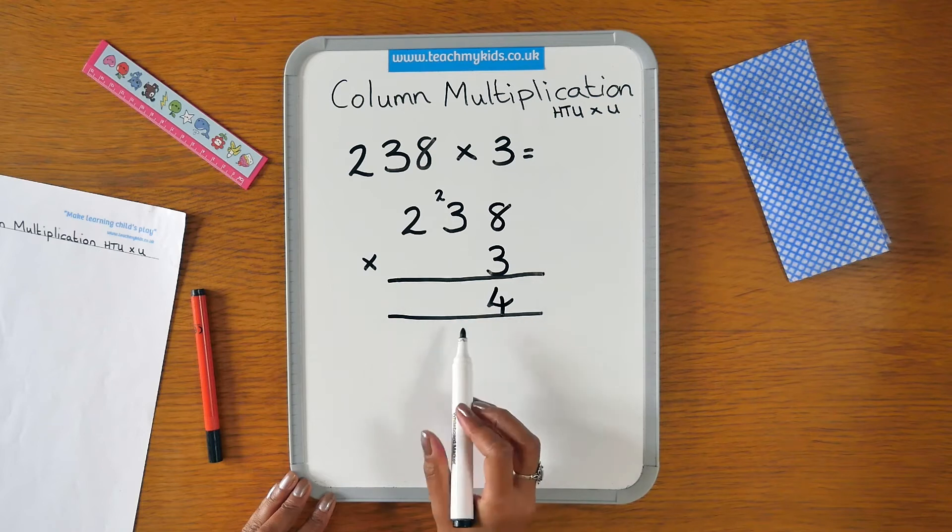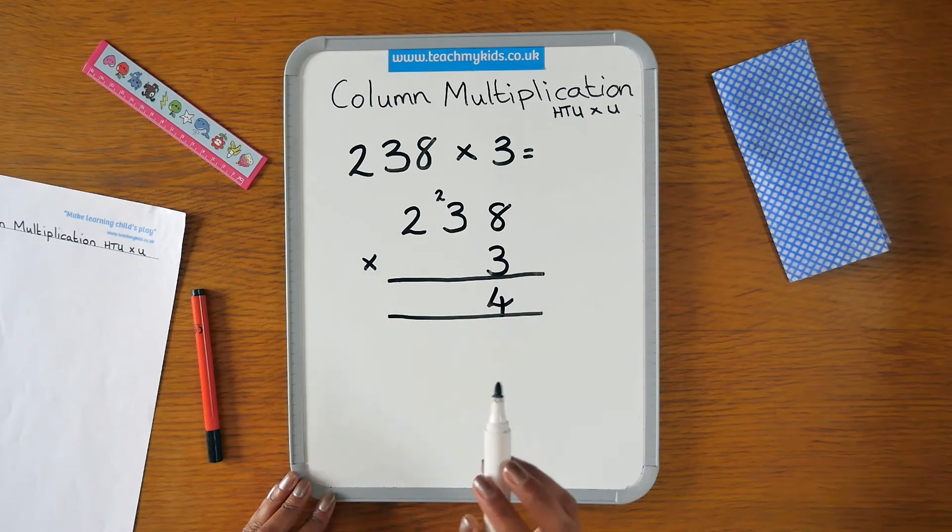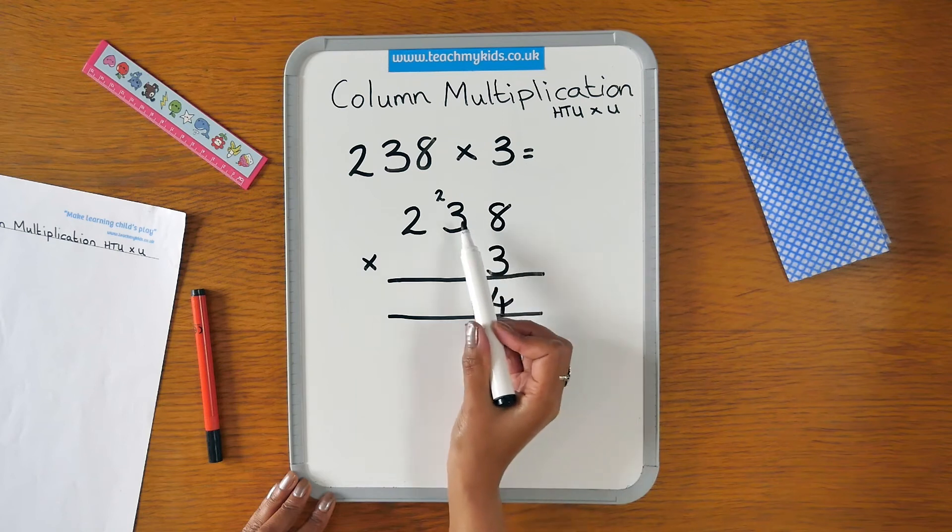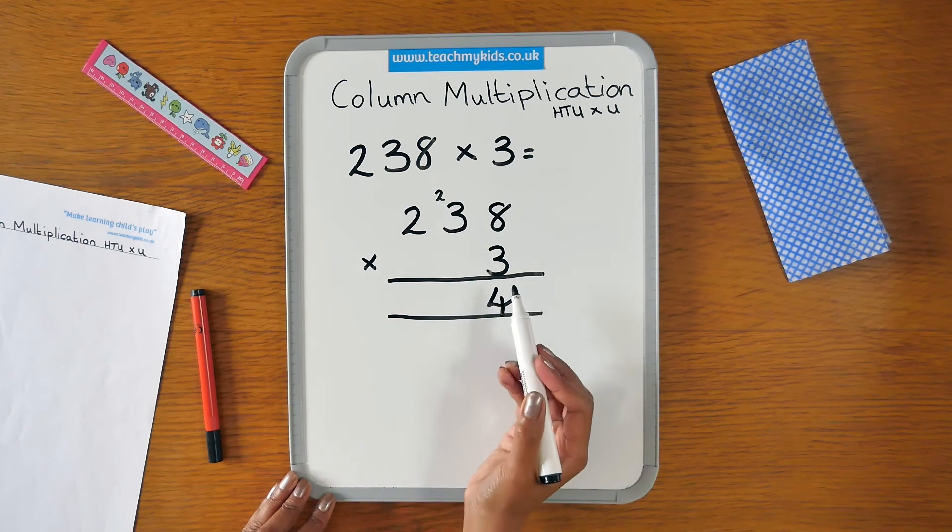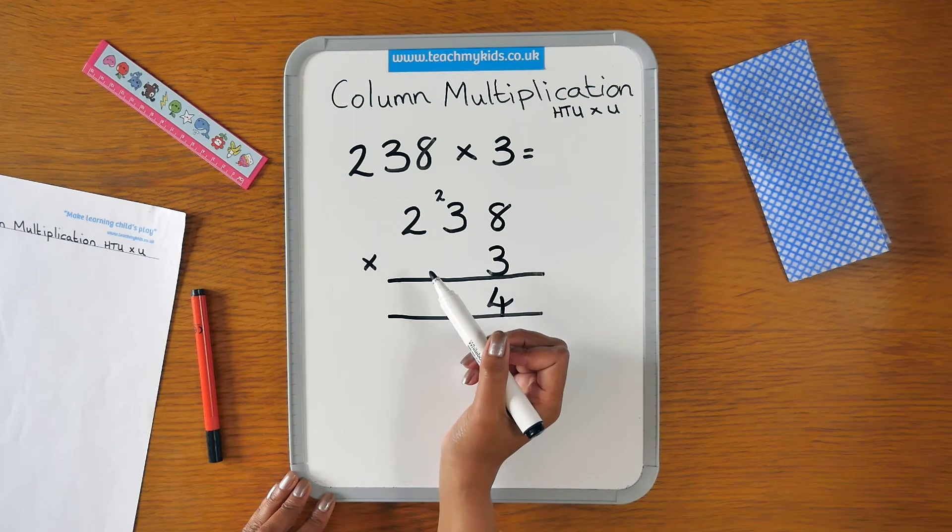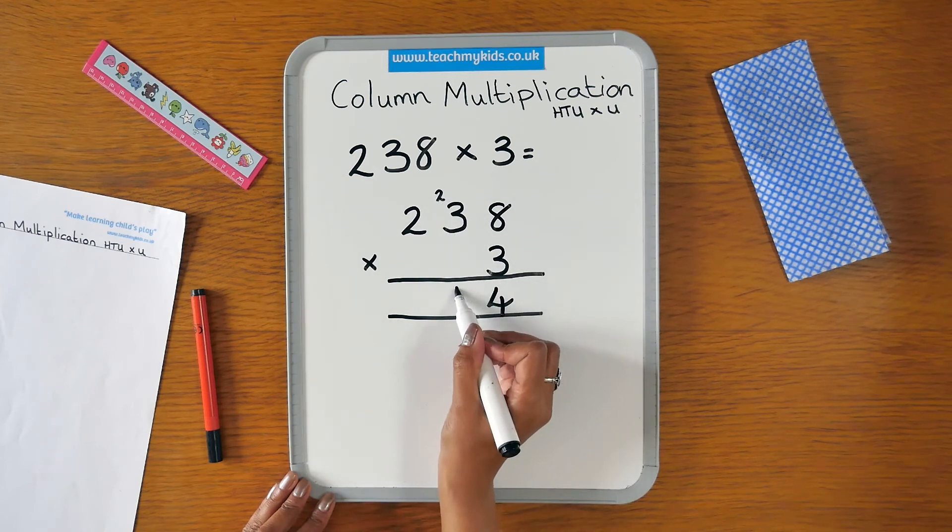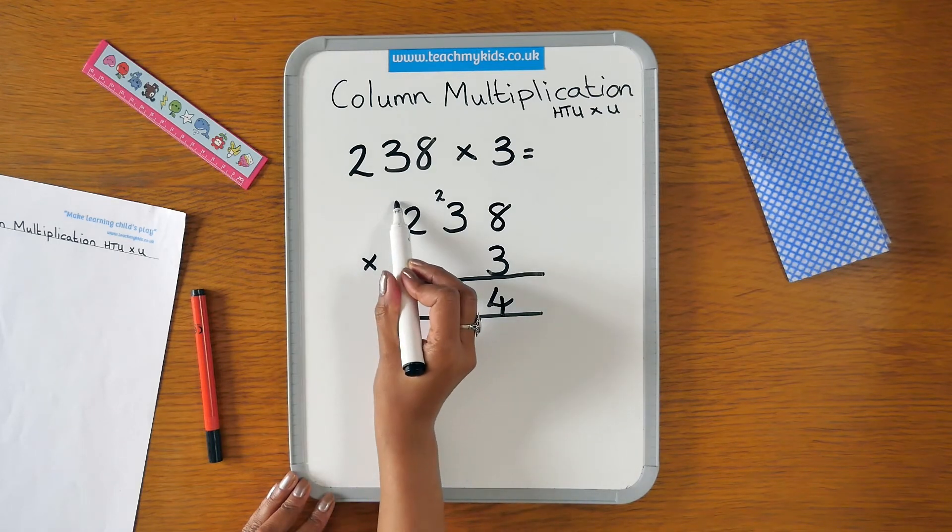If you want to, you can put the 2 underneath. You can choose which is better for you. We then do 3 times 3 which is 9, plus the 2 we carried. 3 times 3 is 9 plus 2 is 11. Put the 1 here and we are carrying 1.